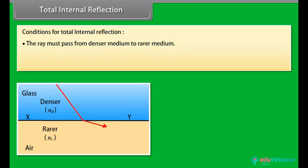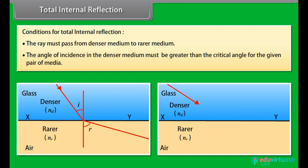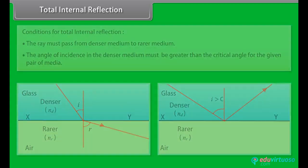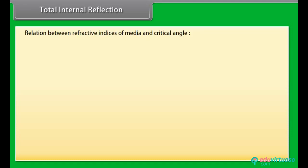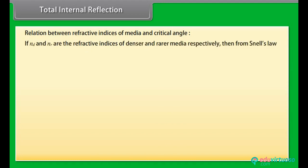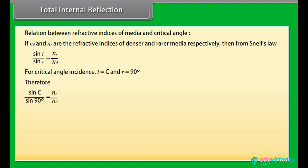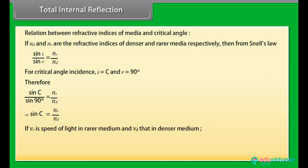Conditions for total internal reflection: The ray must pass from a denser medium to a rarer medium, and the angle of incidence in the denser medium must be greater than the critical angle. From Snell's law, sin C / sin 90° = nR / nD, so sin C = nR / nD. If vR and vD are the speeds of light in rarer and denser media respectively, then sin C = vD / vR.